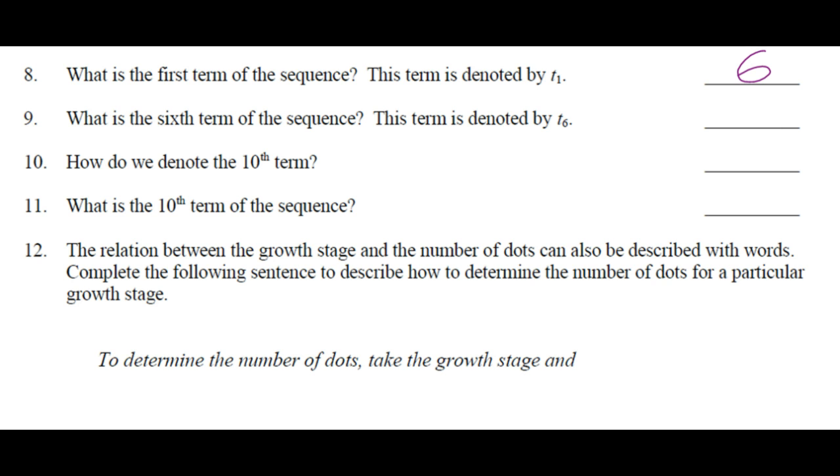What is the 6th term of the sequence? This term is denoted by T6. 41. How do we denote the 10th term? T sub 10. This is why we've really got to say sub, right? Because we're saying this out loud. If I say T10, what does that mean, right? So you say T sub 10. What is the 10th term of the sequence? 69.